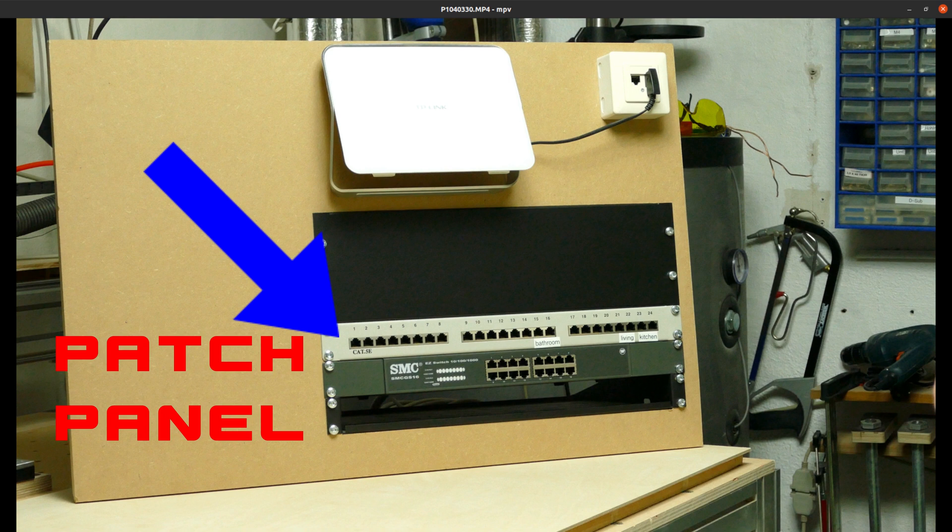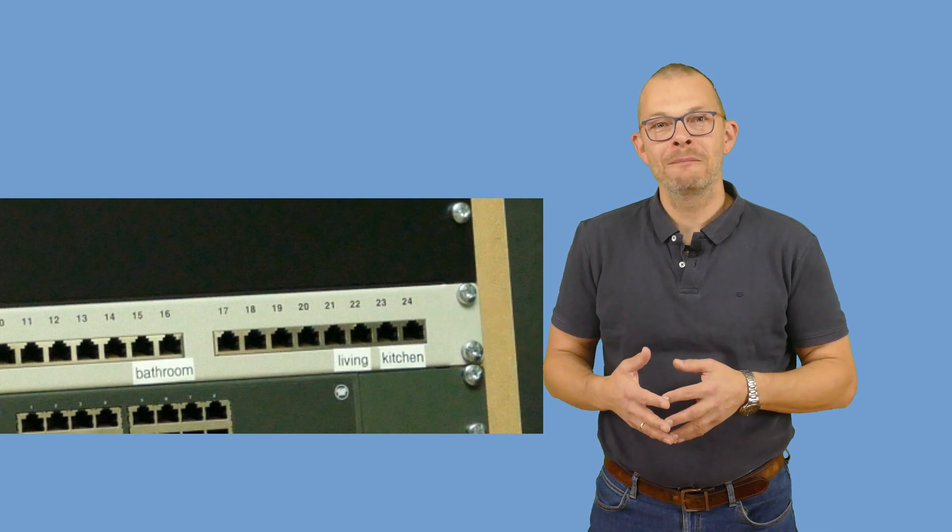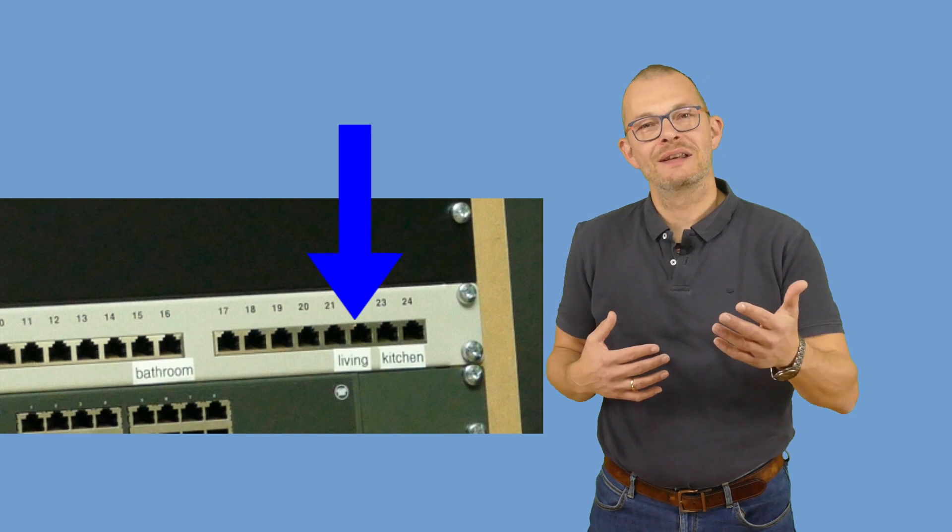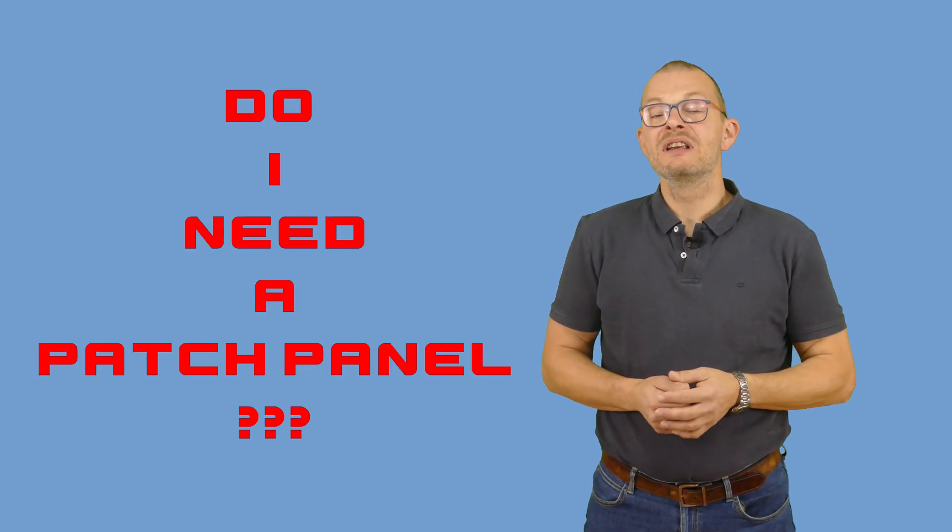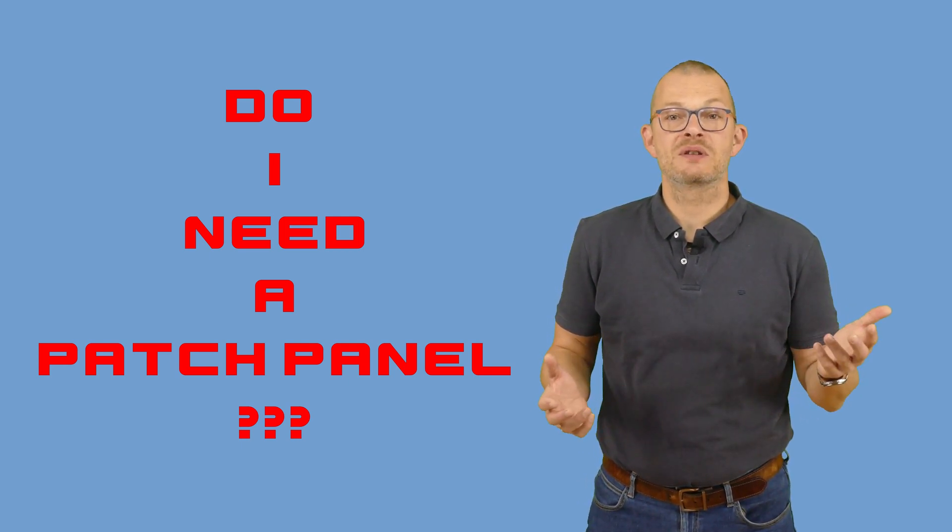One of the central components of the cabling infrastructure is the patch panel. This is where all the cables from the house come together. For example, this outlet goes to the living room, meaning there's a connector in the living room and a cable going from there to this point here. Some of you were asking if you really need a patch panel, and there are also YouTubers saying that you don't need it for small homes.